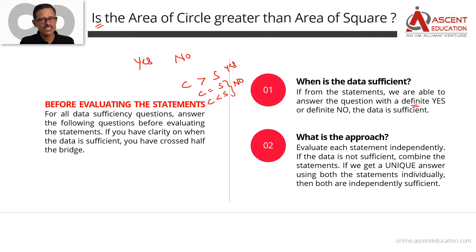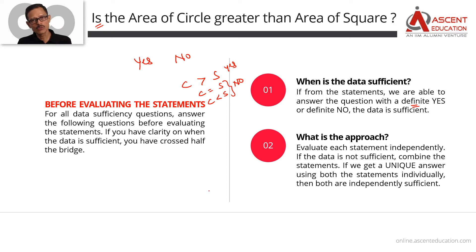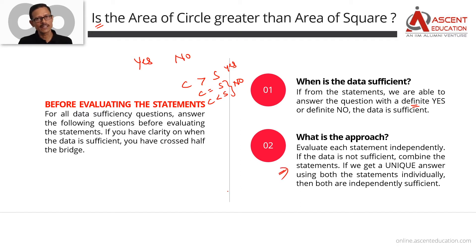When is data not sufficient? When sometimes from the given data the circle area appears less and other times it appears greater — you cannot give a definite answer. The approach is to evaluate each statement independently, and if required, combine them and evaluate together.